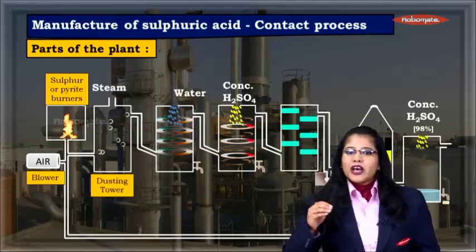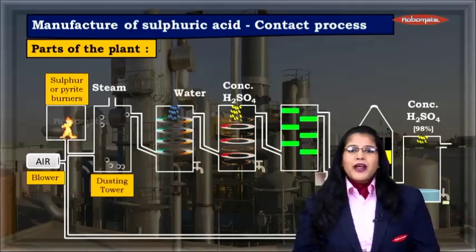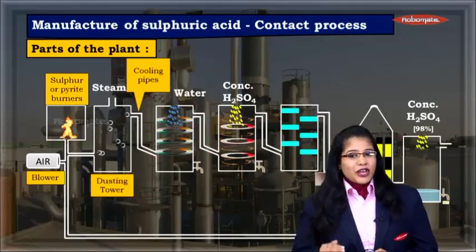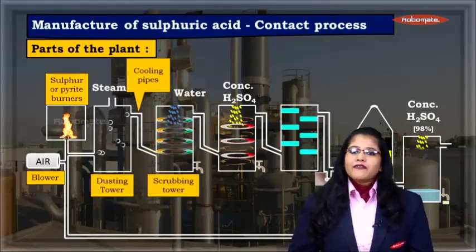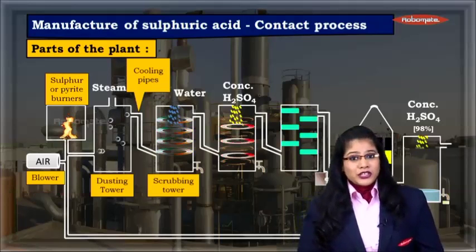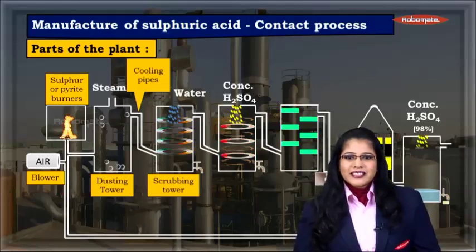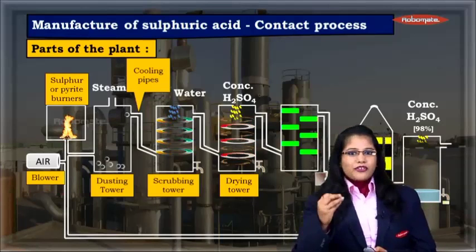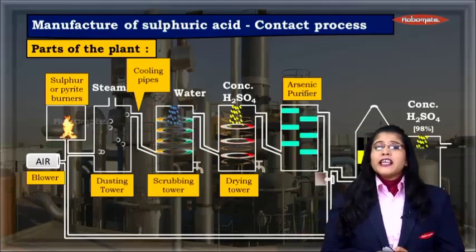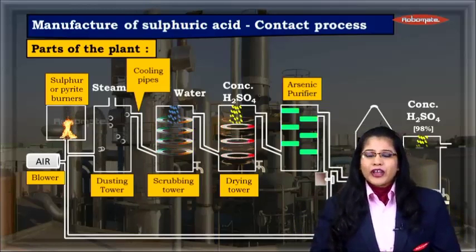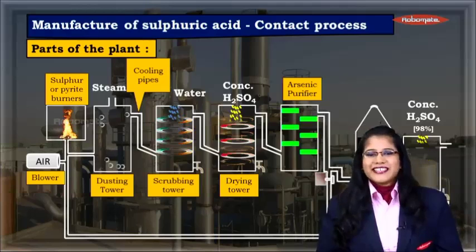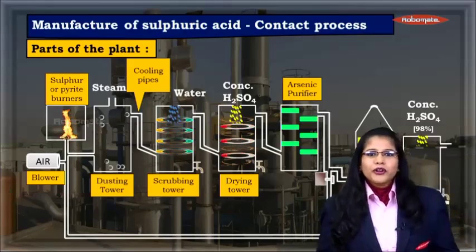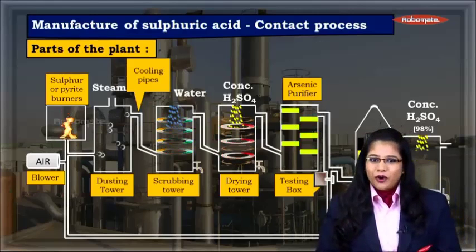The entire setup that follows is for cleaning the sulphur dioxide so formed. Sulphur dioxide is first put into the dusting tower where all the dust particles are settled down. Further it is sent through cooling pipes where sulphur dioxide is cooled, after which it is taken to the scrubbing tower for further removal of dust particles, then to the drying tower to remove any moisture present, and finally to the arsenic purifier where arsenous oxide impurities are removed. Whether all the impurities are removed or not can be tested using the small testing box.